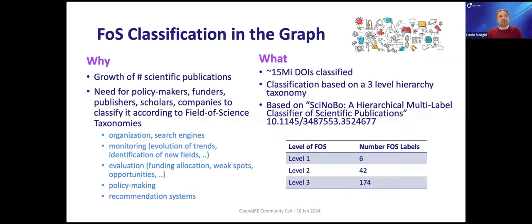Fields of science classification is very important for a graph like this to have a uniform interpretation of what science is — research fields, research topics. We picked the fields of science classification because it is well adopted and widely adopted. We have implemented algorithms that follow up on very consistent research and integrated that into our data provision chain.